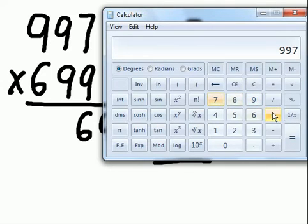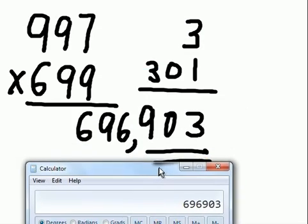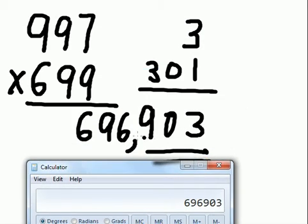997 times 699 equals... oh la la! 696,903. We've got ourselves a match! Let's do one more and call it a day.